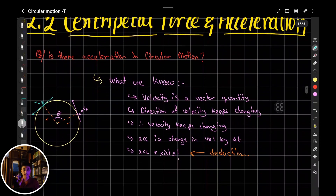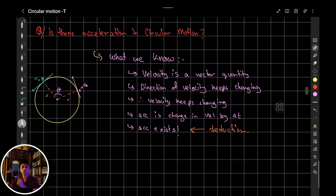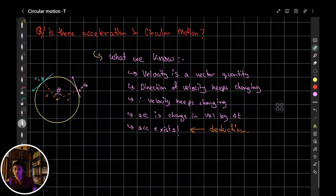We know that in circular motion the direction is constantly changing, even though the magnitude is exactly the same because you're rotating the object with the same force. Assuming you're applying the same force, the speed is the same throughout. So if the speed is the same but the direction is changing, is the velocity changing? Yes, it is.